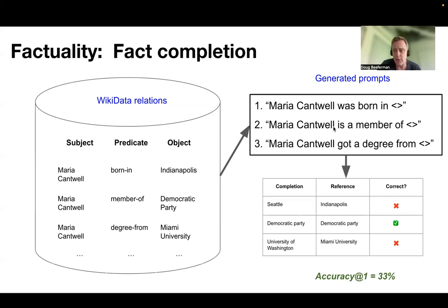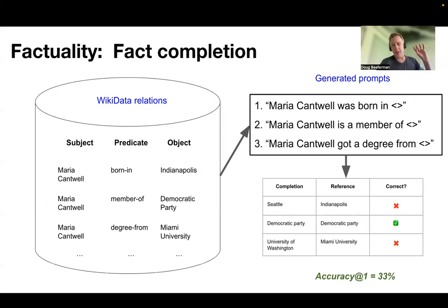And then simply ask the language model for the highest probability completion. So if we do this for the model I looked at in the previous slide, which was an early version of GPT-3, it gets about one third of the questions right. So this would give us an accuracy at one — meaning the likelihood that the correct answer is the highest probability completion — of only 33%. So that's one indication that model is not doing particularly well for this kind of knowledge.